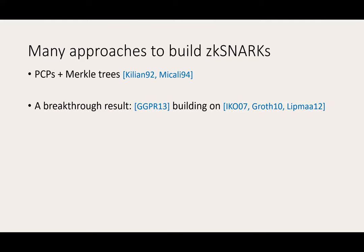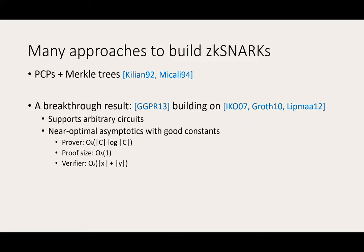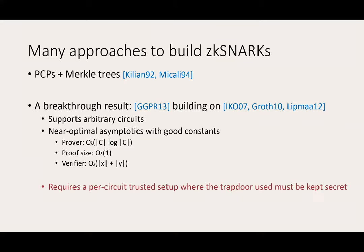A breakthrough result in this area was provided by the work of GGPR. Their scheme supports proving the satisfiability of arbitrary circuits. More importantly, the scheme features near-optimal asymptotics with good constants. Unfortunately, a major problem with the scheme is that it requires a per-circuit trusted setup to produce public parameters. The setup is trusted because it requires a trapdoor that must be kept secret to ensure soundness.